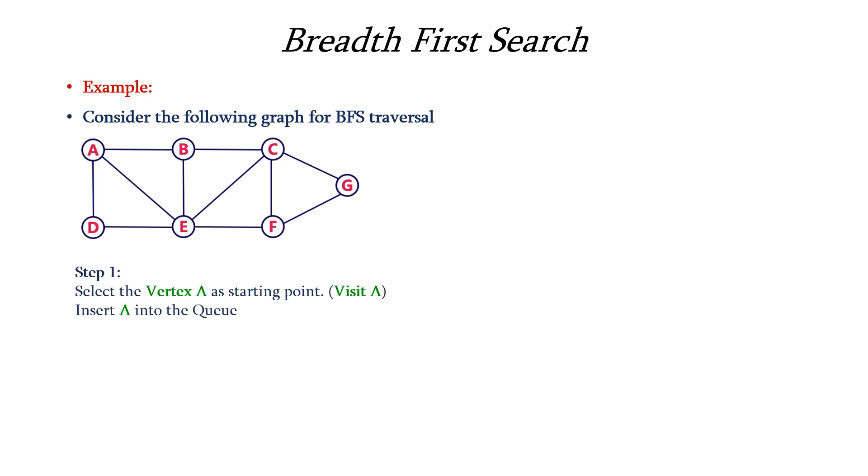Consider the same graph which we considered for DFS traversal. We have nodes from A to G and step 1 is select any one vertex as the starting vertex so let it be A and it is considered as visited and we have to insert it into the queue. So visited node is indicated with green shade and that particular node has been inserted into the front of the queue.